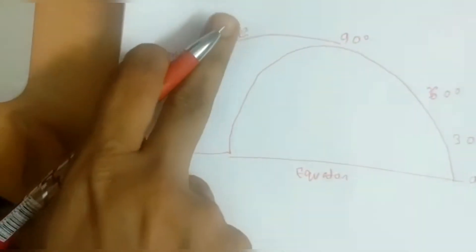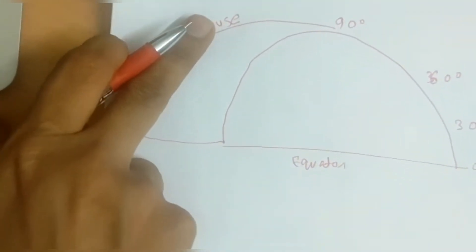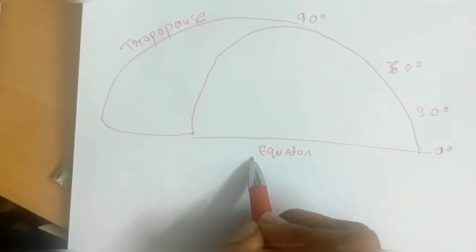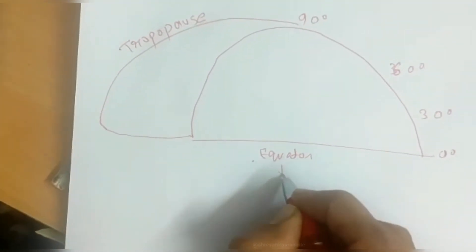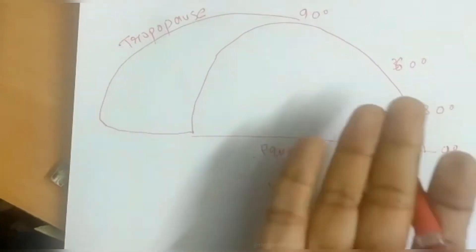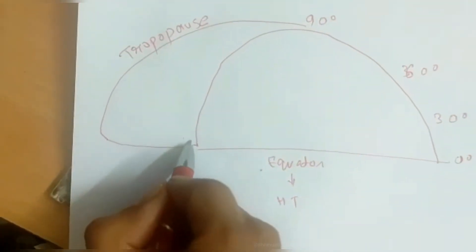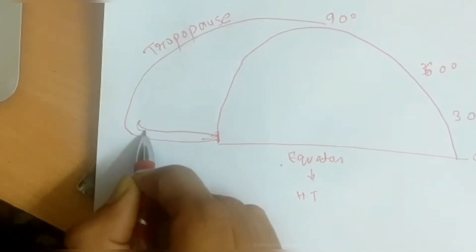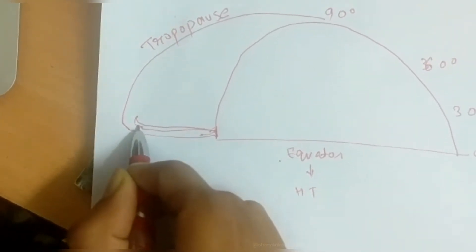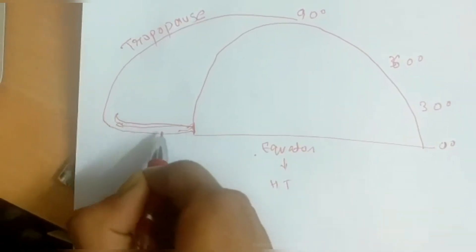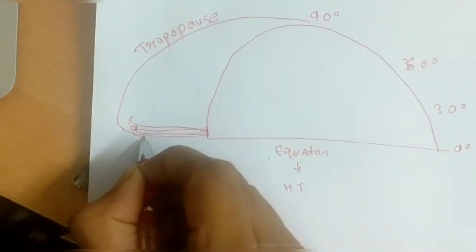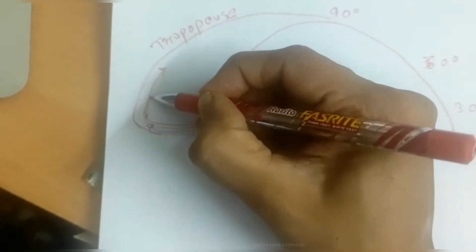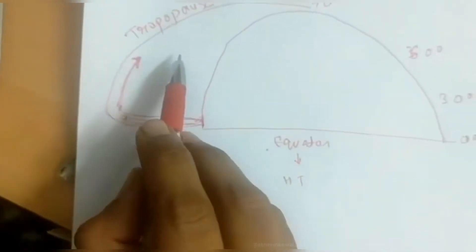The tropopause is acting as a lid to the troposphere. Now here at the equator there is high temperature, so the air rises up from the surface to the tropopause. Beyond the tropopause the air cannot rise. Because the air is rising here, it will move along the tropopause until it reaches around 30 degrees.